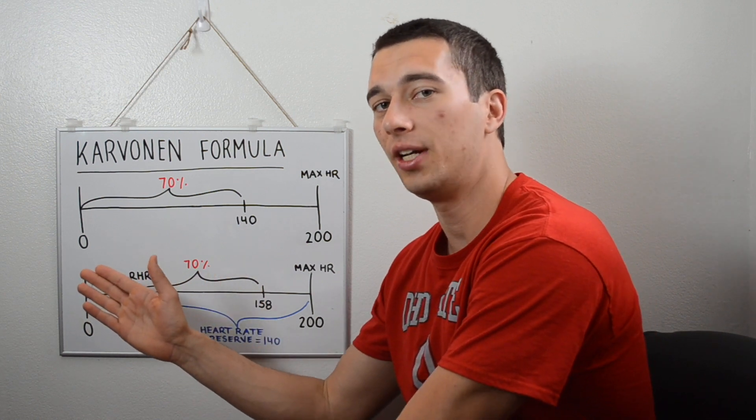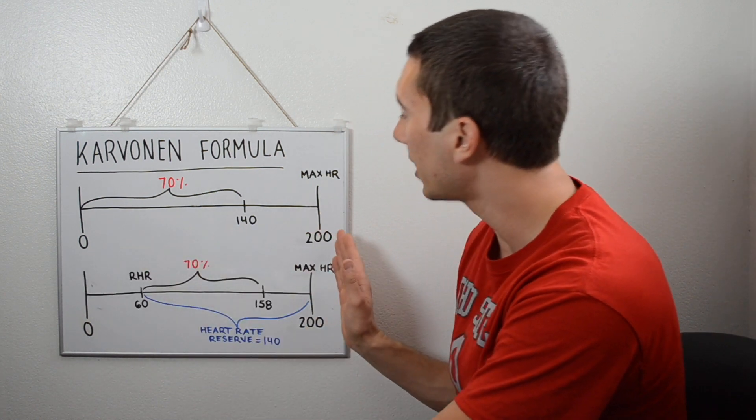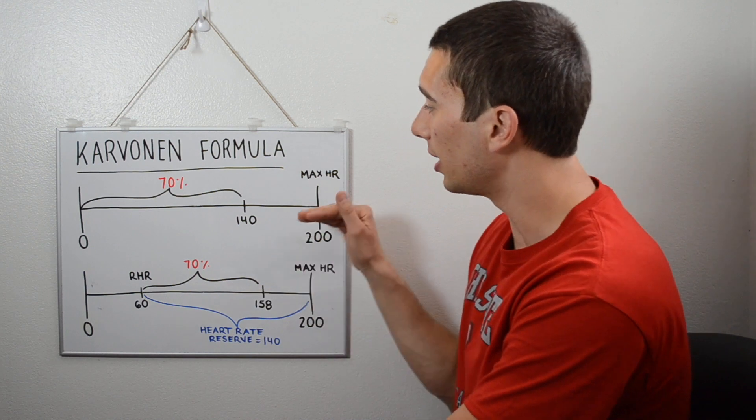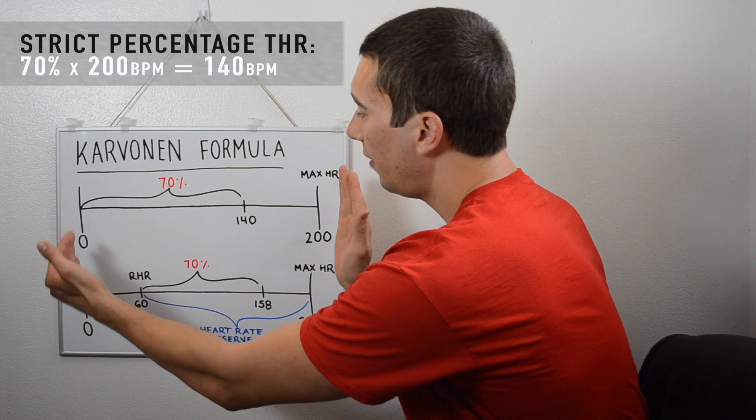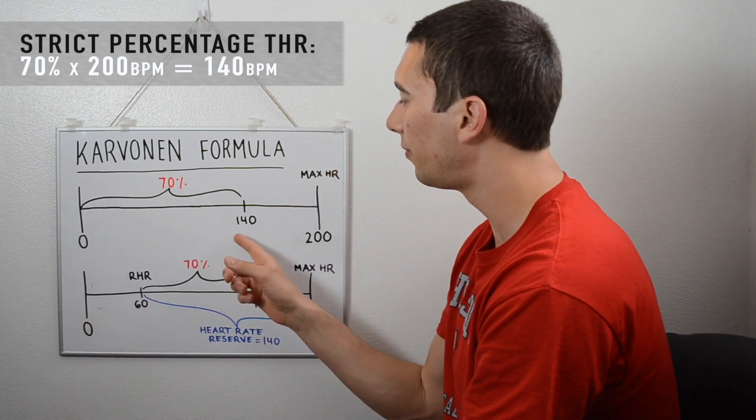All right, so one way to think about this is on a number line from zero to max heart rate. So if we're thinking about a target heart rate just based on a strict percentage, 70% of max heart rate would just be 140 beats per minute.